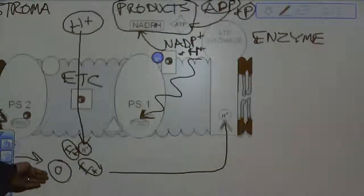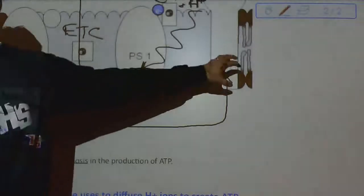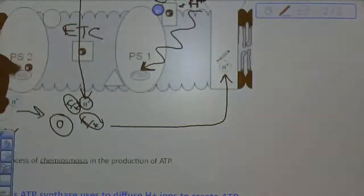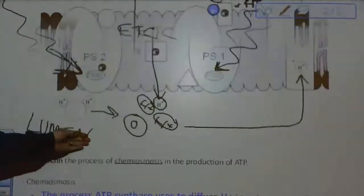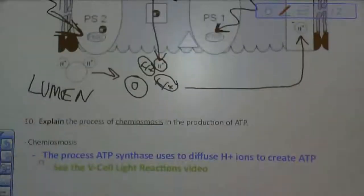Last part, chemiosmosis, is this process here of the enzyme utilizing that diffusion of hydrogens to create ATP.